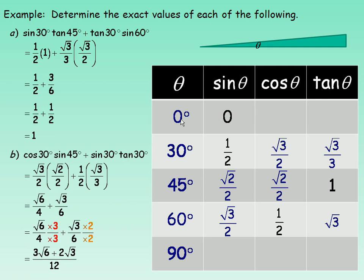As this angle approaches 0 and the opposite side gets small and approaches 0, the adjacent side and the hypotenuse become the same length. Dividing two things of the same length gives a value of 1, so that's why the cosine of 0 degrees is 1. For tan — opposite divided by adjacent — if this side reduces to 0, we have 0 divided by a non-zero value, which is always 0. So the tan of 0 degrees is also 0.